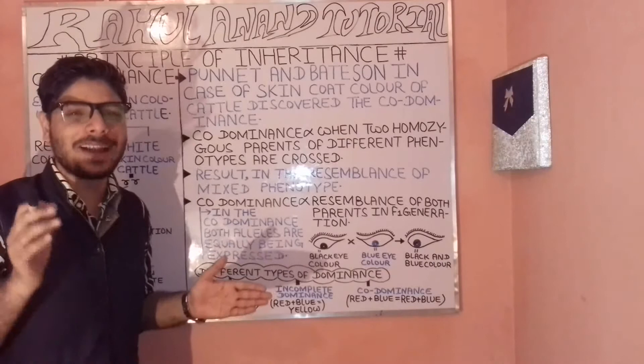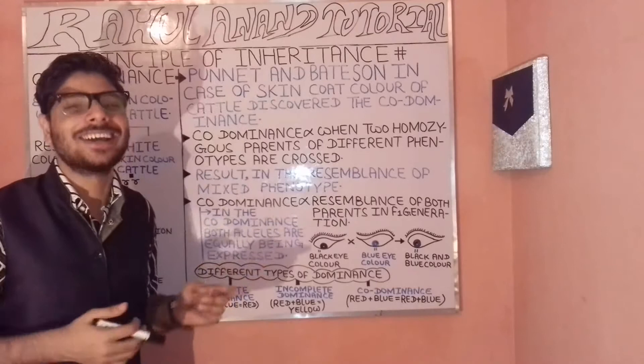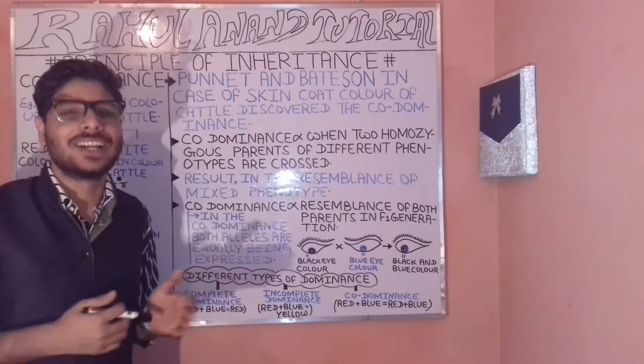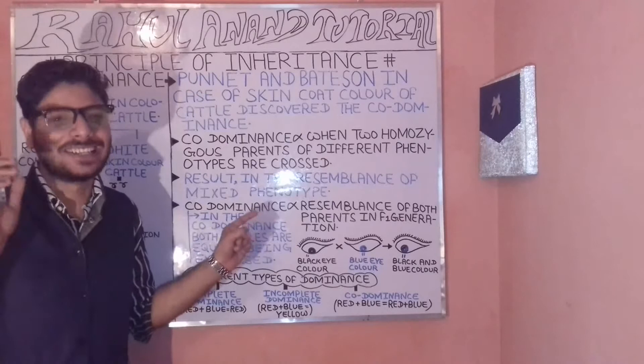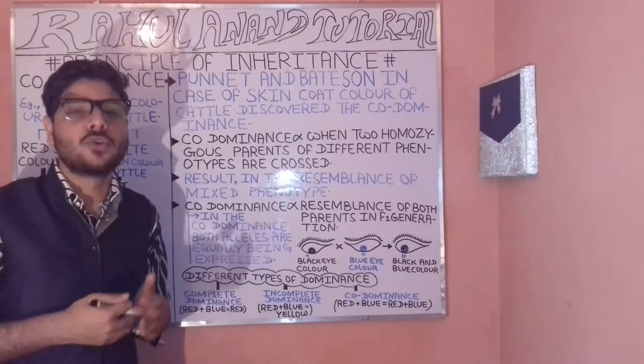Batson and Panet discovered co-dominancy primarily while studying the skin coat color of cattle. Let's understand what co-dominancy actually means. When two homozygous parents of different phenotypes are crossed, it results in the formation of a co-dominancy case.